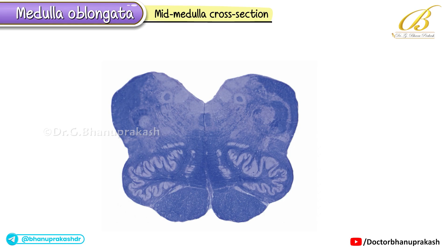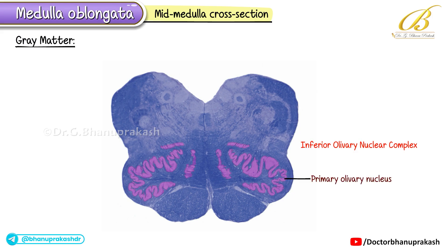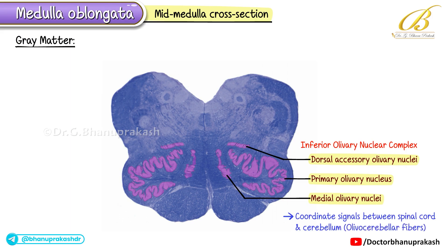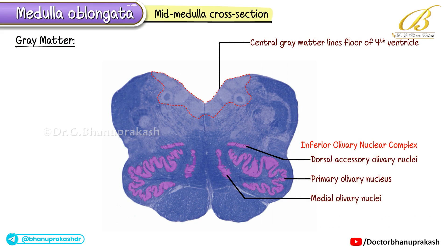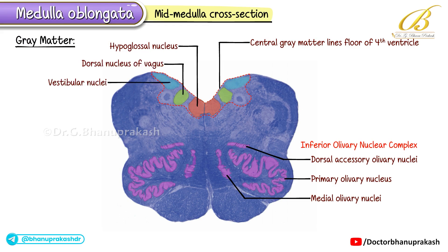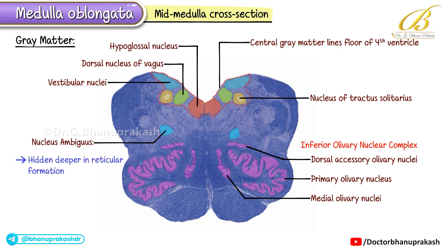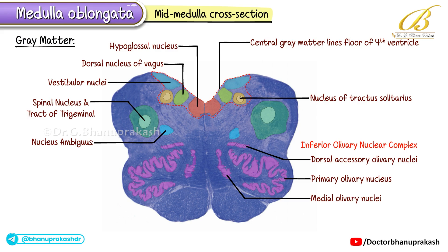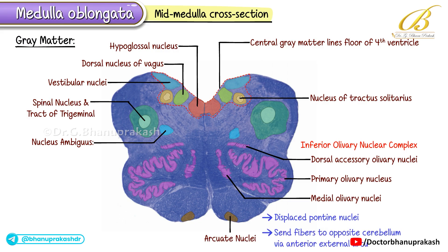Moving upward to a mid-medulla cross-section, commonly referred to as the sensory decussation level, the inferior olivary nuclear complex includes the primary olivary nucleus as well as medial and dorsal accessory olivary nuclei, coordinating signals between the spinal cord and cerebellum via olivocerebellar fibers. The central gray matter lines the floor of the fourth ventricle, containing the hypoglossal nucleus, dorsal nucleus of vagus, vestibular nuclei, and nucleus of tractus solitarius. The nucleus ambiguus, hidden deeper in the reticular formation, gives motor fibers to certain cranial nerves. The arcuate nuclei are displaced pontine nuclei that send fibers to the opposite cerebellum via anterior external arcuate fibers.